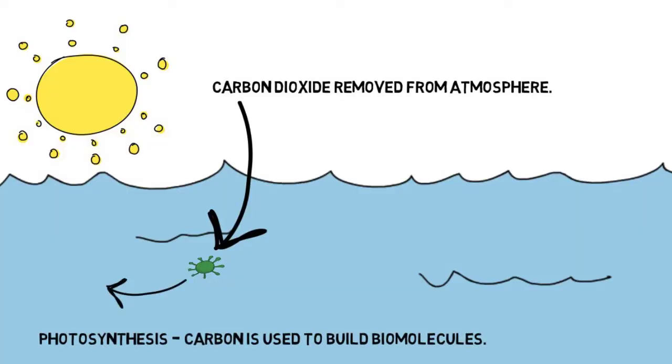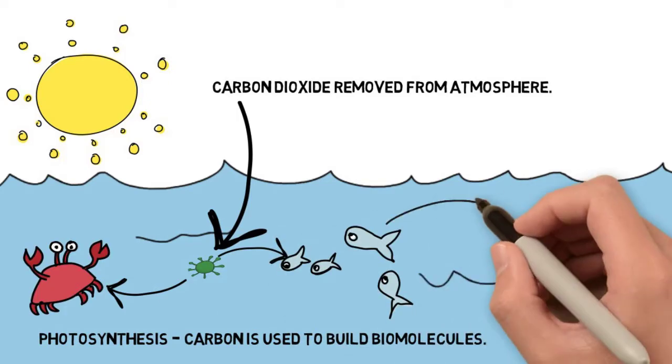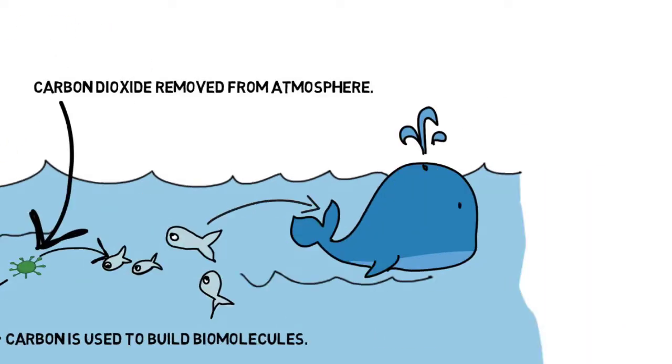These phytoplankton, these microscopic organisms, get eaten by other organisms. And the carbon in them gets used or fixed to form different new biomolecules. And it passes along the food chain.